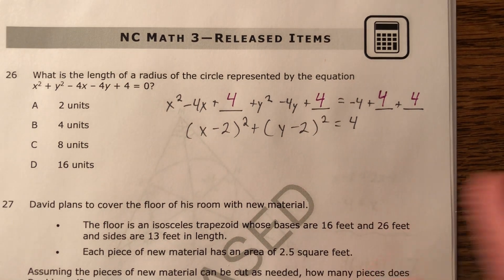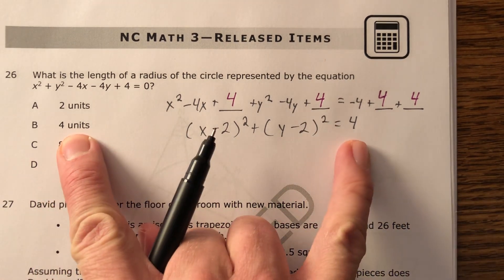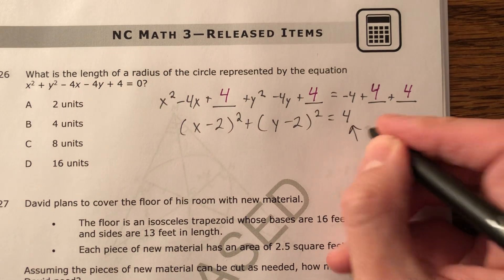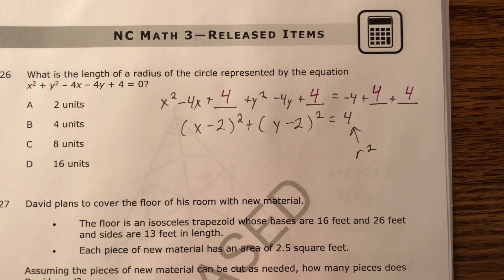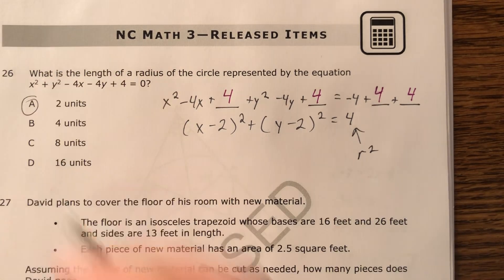And so the final answer is not 4. See? Okay. What's the radius of the circle? This right here, just to remind you, is r squared. Therefore, r is equal to...